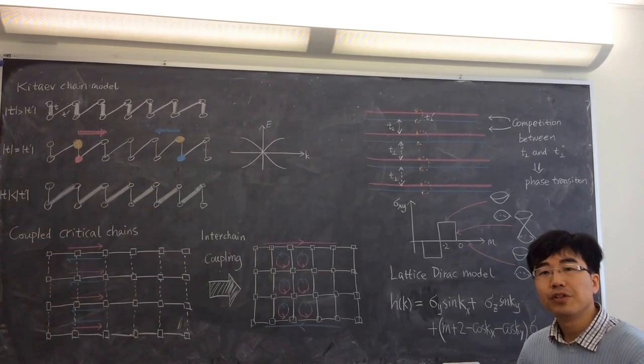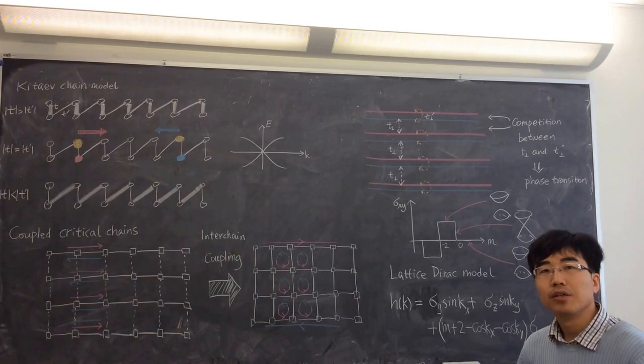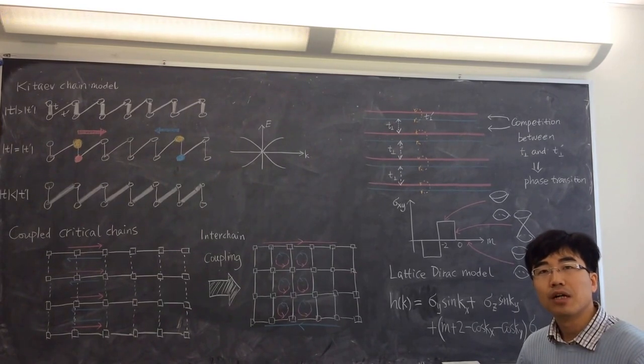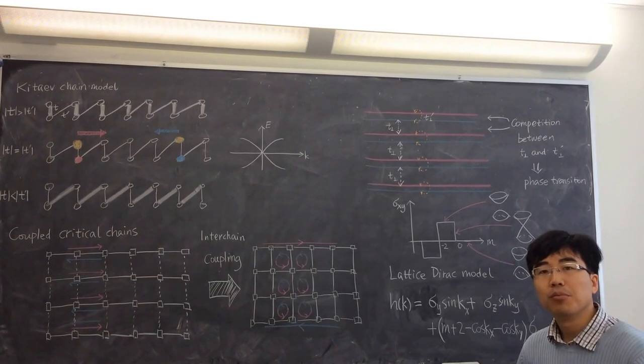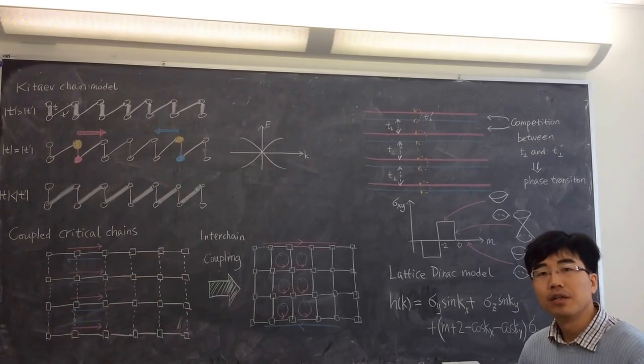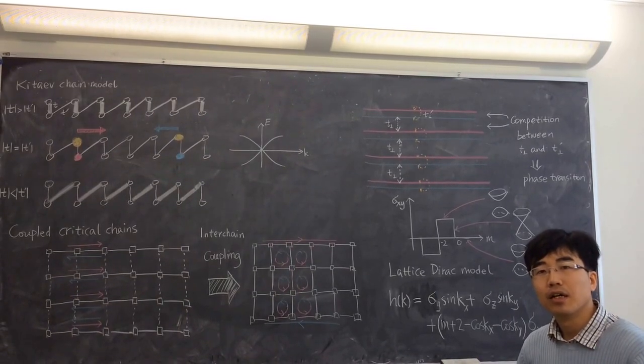And the common feature of this model is that you don't have Landau levels. Electrons are moving around in the system, but there is a gap. The bulk is an insulator, but there are chiral edge states on the boundary.